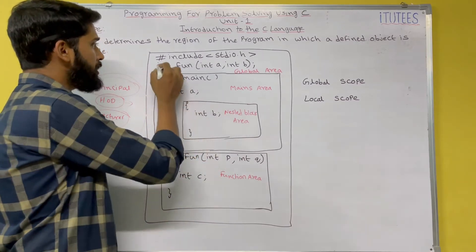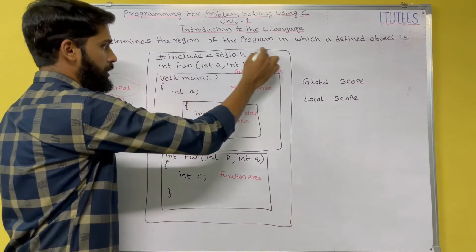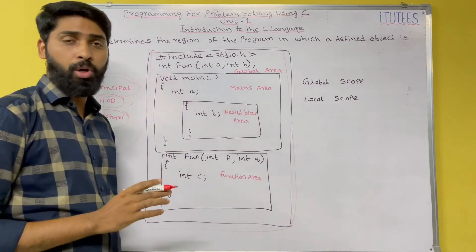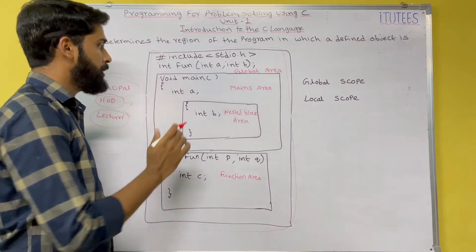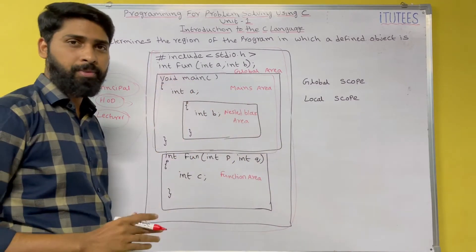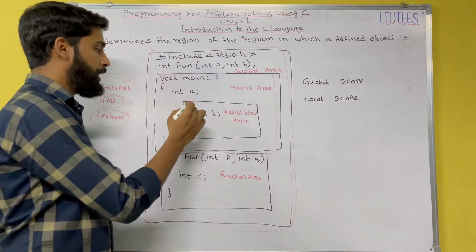Now, in this, so this part, we are called as a global area. Global area. So this part, the main part, we are called as a main area. If you define another block.